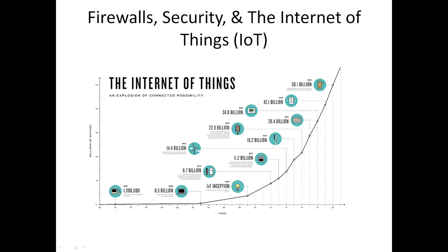Welcome everybody. This is a small talk about firewalls, security, and the internet of things. I'm going to focus on discussing where all these items intersect and what it means for you as a consumer, and potentially as a network administrator. I'm primarily gearing this talk towards small network administrators and general home users, so you have a better understanding of the security implications of the internet of things as it rapidly evolves.